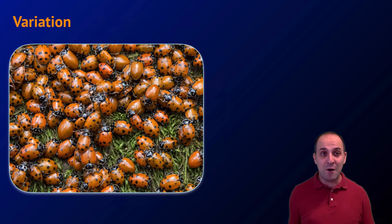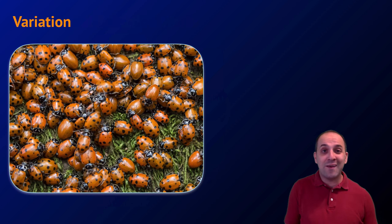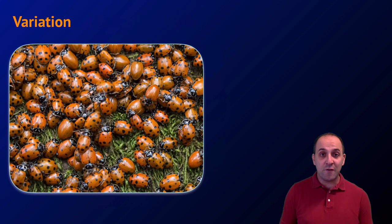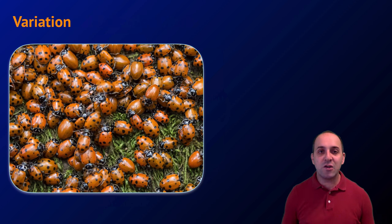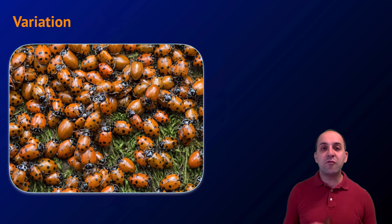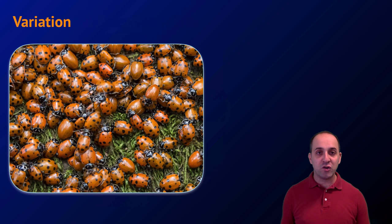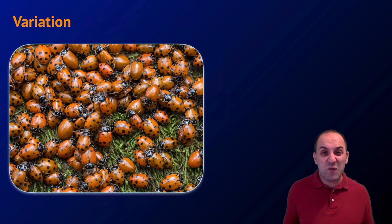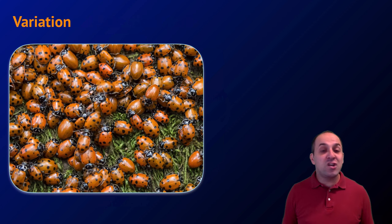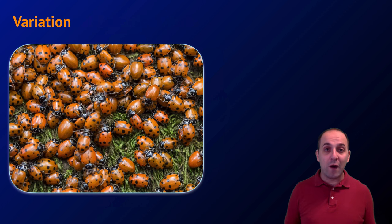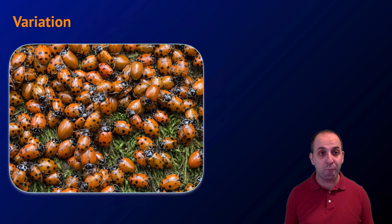If we watched them at work, we'd see that they also have variations in their behaviors. This is true of all members of all generations of all organisms — from bacteria to ladybugs to trees to elephants and of course to humans as well. Variation is the raw material necessary for evolution, and we'll talk a lot more about where variation comes from over the span of this course.